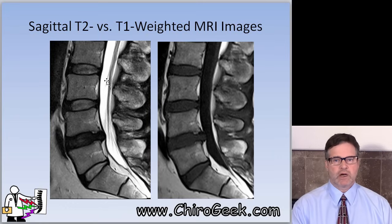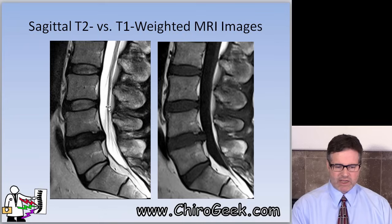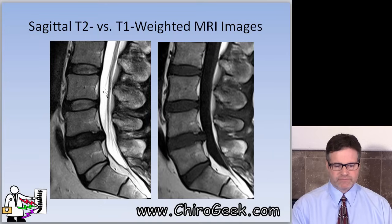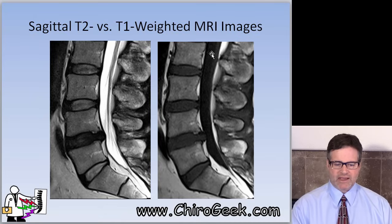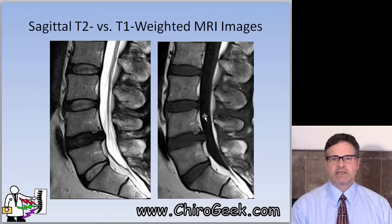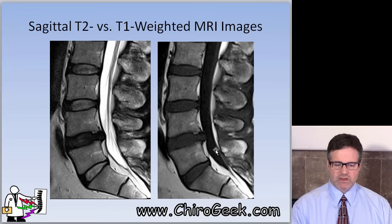Here we have a small contained disc herniation out the back on this T2-weighted image. Is this a mid-sagittal or parasagittal cut? It's right in the middle — we can see the central canal has a good dimension and we can see the spinous process, so this is a mid-sagittal view. Now looking at the T1-weighted image, the thecal sac is black — that's what a T1 image looks like. Tissues with high water content turn hypointense or black, which differentiates the thecal sac from the epidural fat.